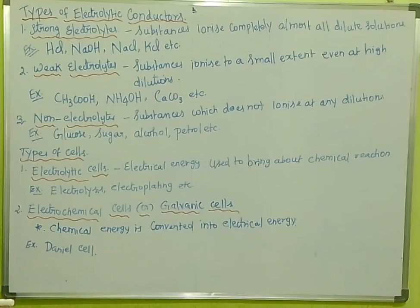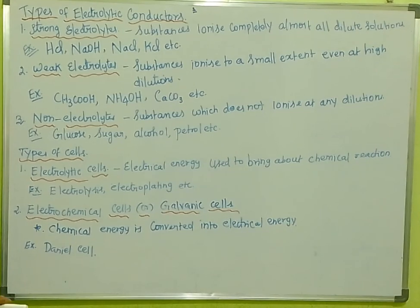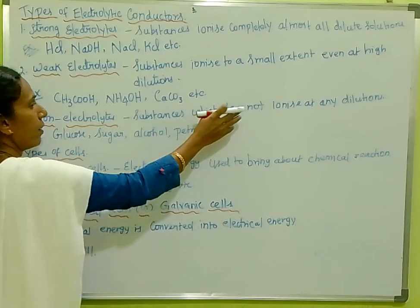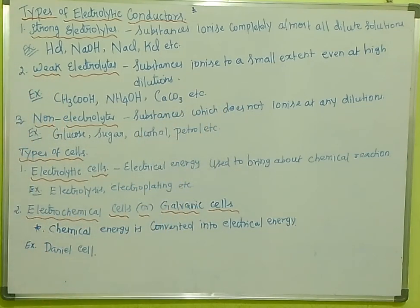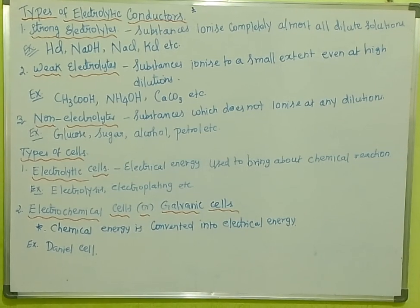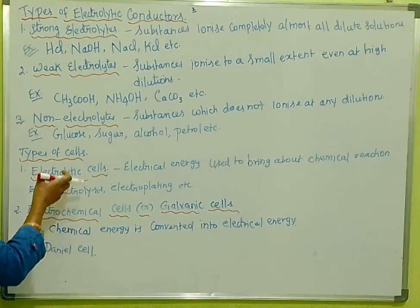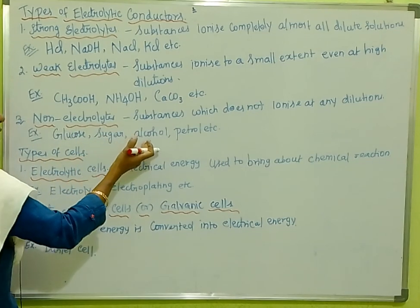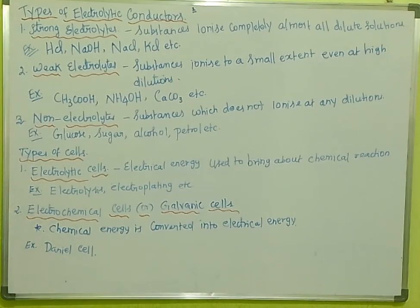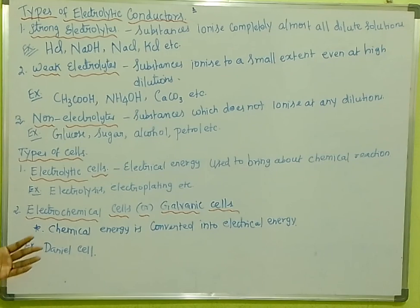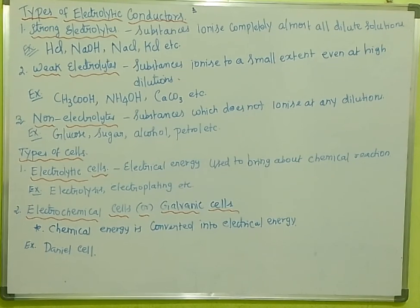Now, non-electrolytes are substances which do not ionize in any dilute solution. Examples of non-electrolytes include glucose, sugar, alcohol, and petrol. In dilute solution, these substances do not form ions. They are called non-electrolytes.